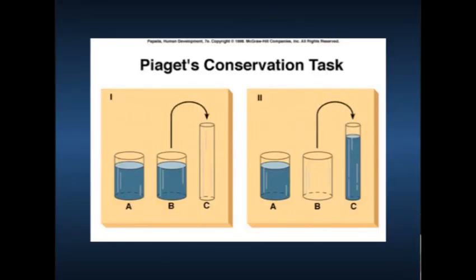So in some follow-up work, some people have done it in a way that makes more sense to the child. There is a naughty teddy who damages one of the beakers, so they have to pour the water into a different beaker, and the only beaker they can find is one that's a slightly different shape. Then it makes sense to say to the child, is there still the same amount of liquid in the two beakers now that we've got rid of the one that's damaged by the naughty teddy?